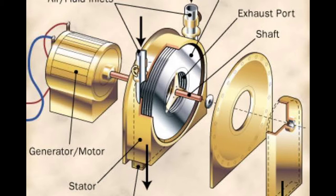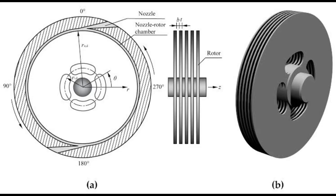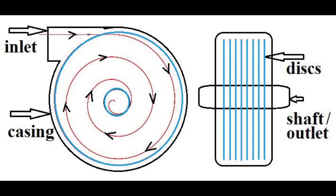A Tesla turbine consists of a set of smooth disks with nozzles applying a moving fluid to the edge of the disk. The fluid drags on the disk by means of viscosity and adhesion of the surface layer. As the fluid slows and adds energy to the disks, it spirals into the center exhaust. Since the rotor has no projections, it is very sturdy.